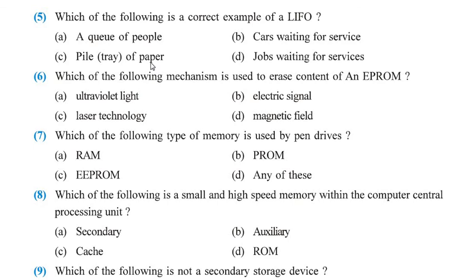Question number 6: Which of the following mechanisms is used to erase the content of an EPROM? The answer is ultraviolet light. If the question is changed and asks about EEPROM instead of EPROM, then the answer will be electric signal.